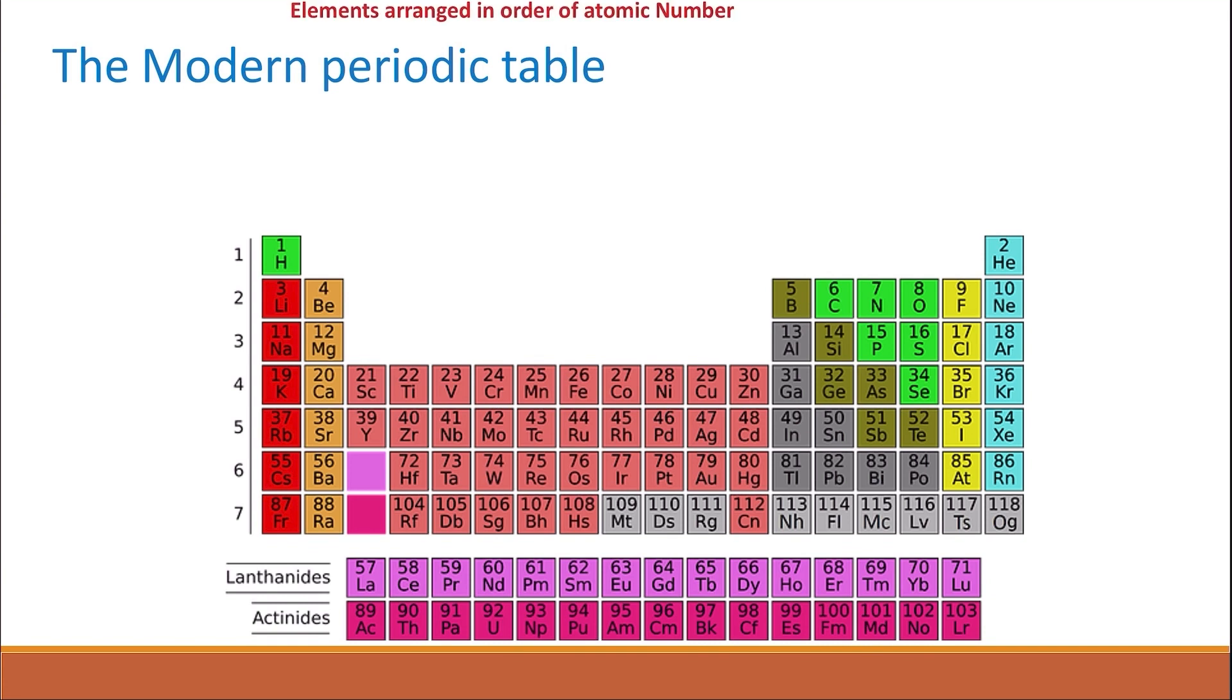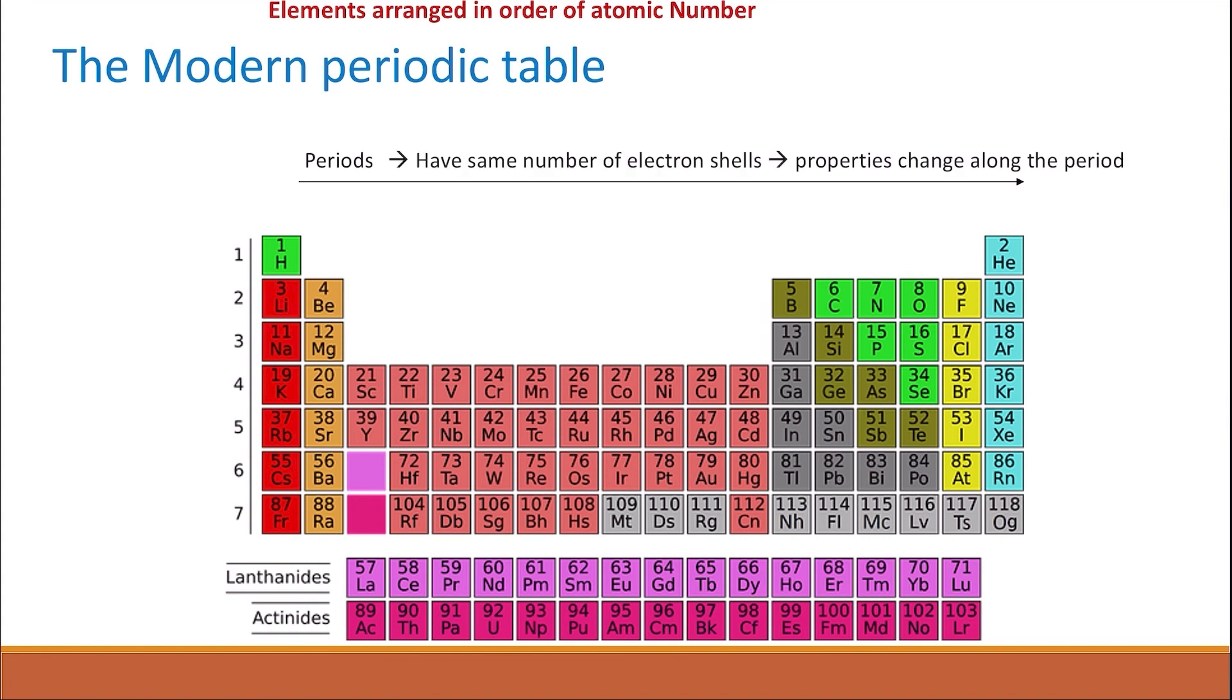The elements are arranged in rows called periods. Elements in the same period have the same number of electron shells. The properties of the elements change along the period.